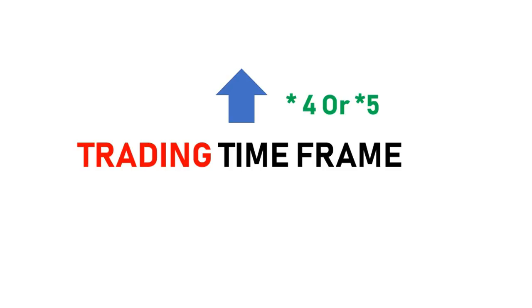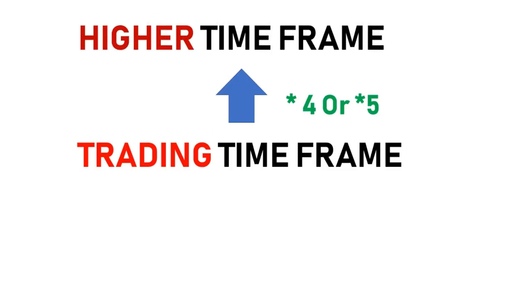I am going to talk about the first time frame and the second time frame. We are going to watch the first time frame and generate a signal using a technical indicator. You will check the higher time frame. The higher time frame allows — 15 into 4 is 60, so 15 minutes into 4 is 60 minutes. So if the trading time frame is 15 minutes, the higher time frame is 1 hour.